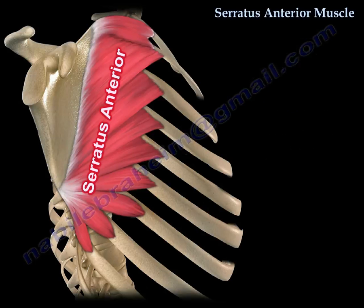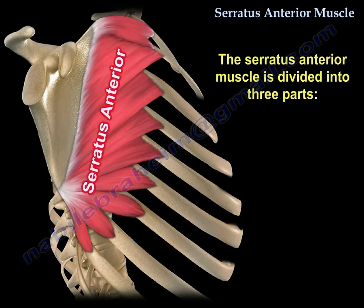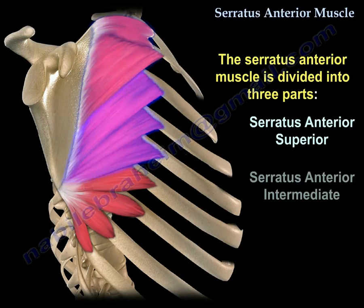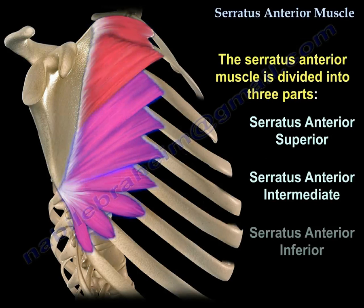The serratus anterior muscle is divided into three parts: the superior part, the intermediate part, and the inferior part.